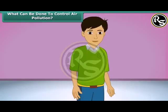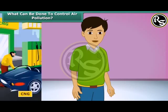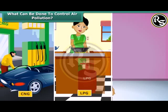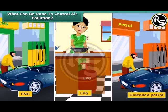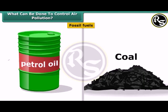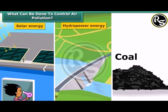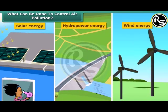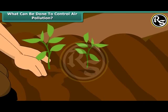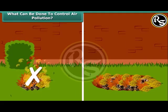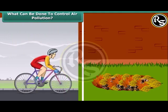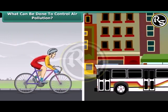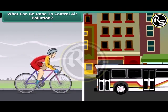What should we do to reduce air pollution? There are many things we can do. We can use clean fuels such as CNG, LPG, and unleaded petrol. Instead of fossil fuels, we can use solar energy, hydropower, and wind energy. We can also plant new trees. Rather than burning dry leaves, we can put them in a compost pit. We can walk more, switch over to bicycles for covering small distances, and use public conveyances.